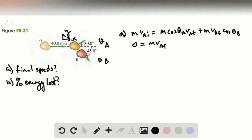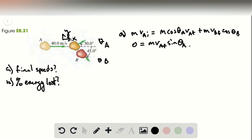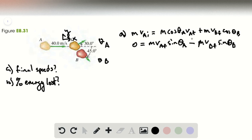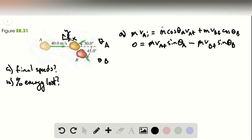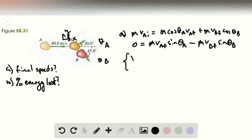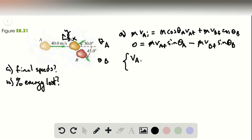So M VA final sine of theta A. Now this is going to be minus because B is moving in the negative, or the y component of B's velocity is in the negative y-direction. So M VB final sine of theta B. So all of the M's cancel out. And we're left with a system of two linear equations and two unknowns.